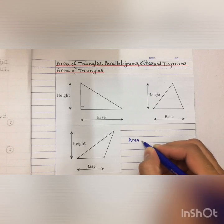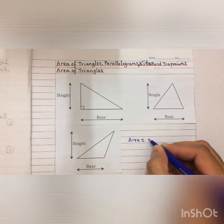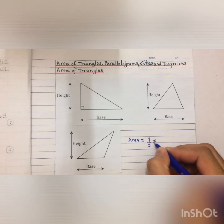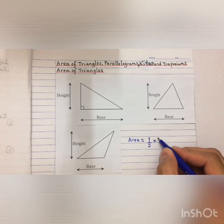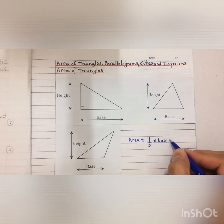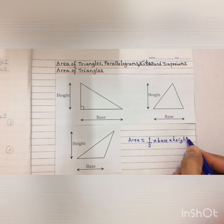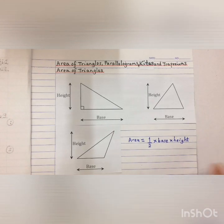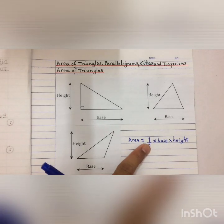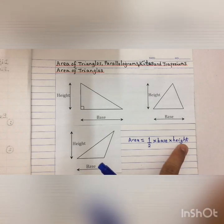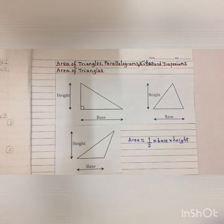The area of a triangle is given as: Area = 1/2 times the base times the height. So if you want to find the area of a triangle, it's very easy — you take 1/2, you times the length of the base, and you times the length of the height.